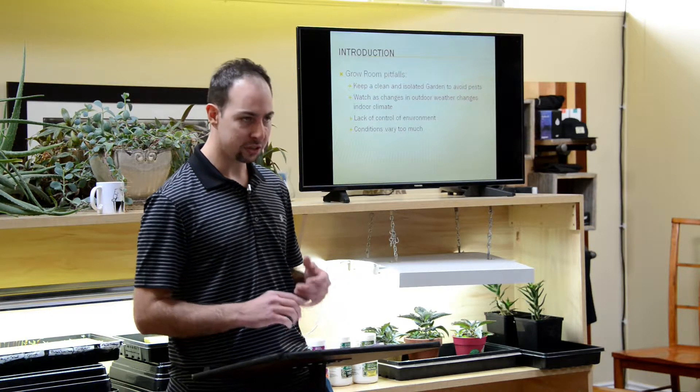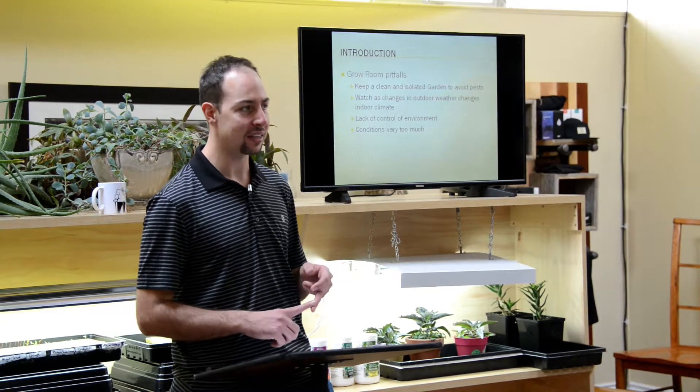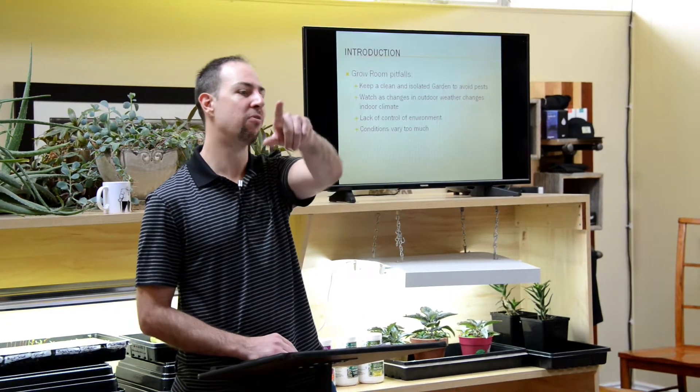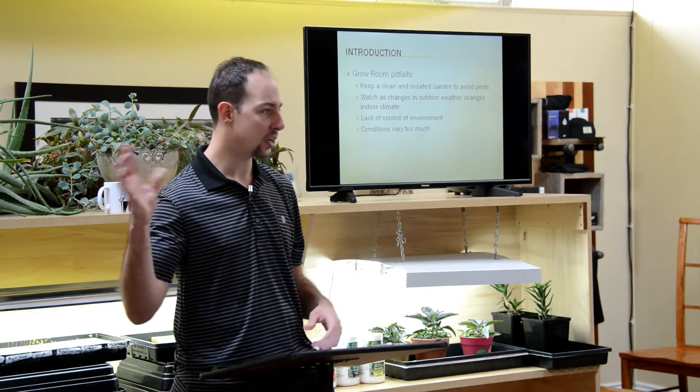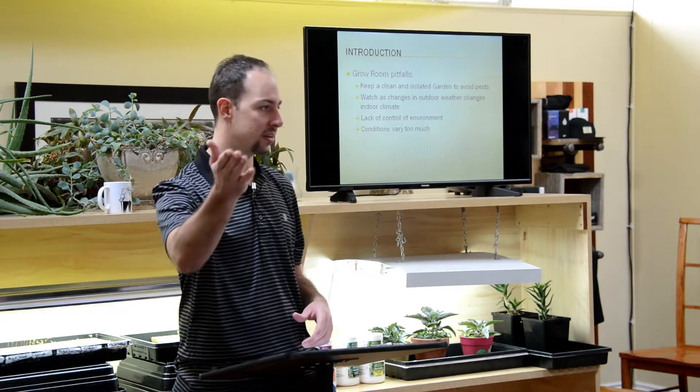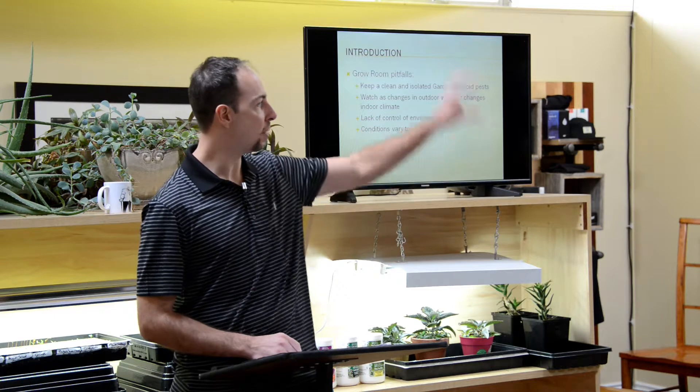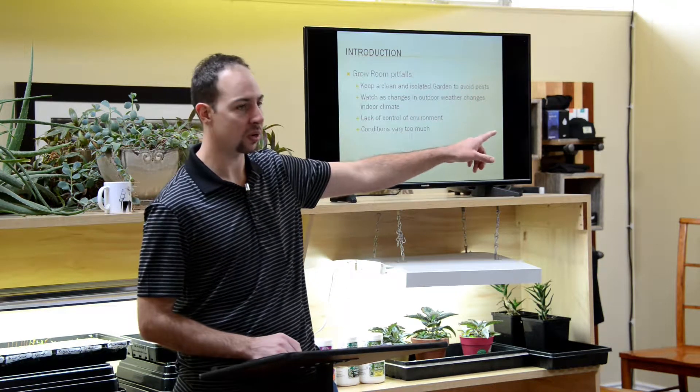So we want to try and keep a clean and isolated garden. I have my grow tent here. I don't want to put it over by the front door because more chance of bugs getting on it from that door there. Maybe I want to put it in a back room and keep that door closed all the time.